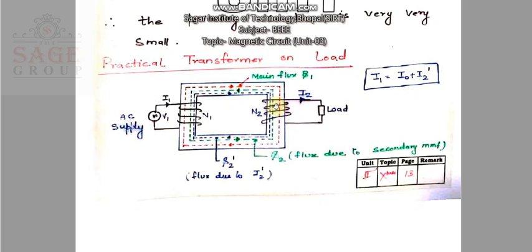So you can say that I1 equals I0 plus I2 dash, where I2 dash is the amount of current which the secondary winding demands from the primary winding. This I2 dash is just opposite to I2. I0 is the core current. So I1 mainly supplies two currents: one is the core current and the second is the current for the secondary terminal. That is why we write I1 equals I0 plus I2 dash.